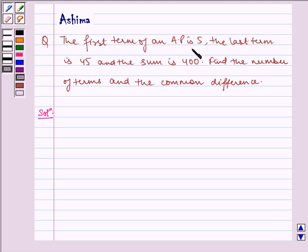The first term of an AP is 5, the last term is 45, and the sum is 400. Find the number of terms and the common difference.